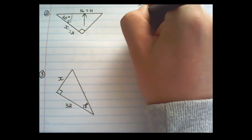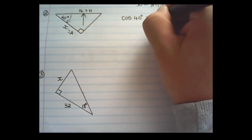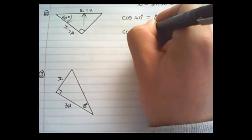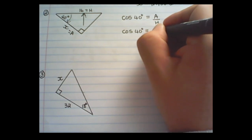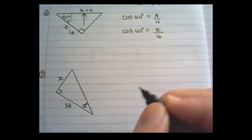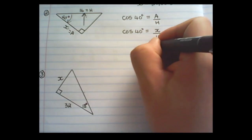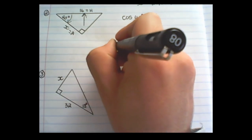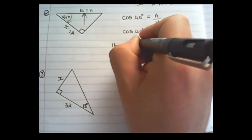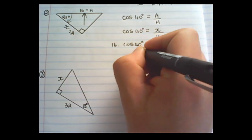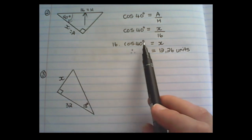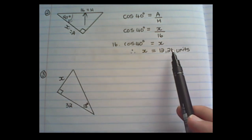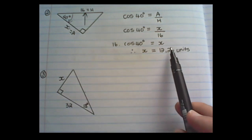So cos of 40 degrees equals the adjacent over the hypotenuse. The adjacent value is x and the hypotenuse value is 16. To find x alone I multiply 16 by cos of 40 degrees. Putting the values into my calculator, 16 times cos of 40 degrees gives x equals 12.26 units.